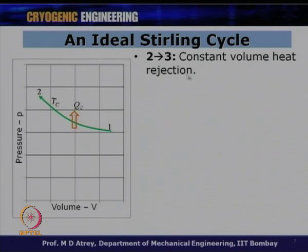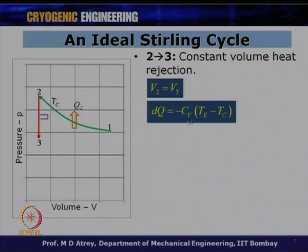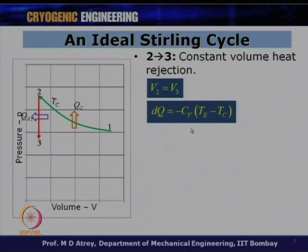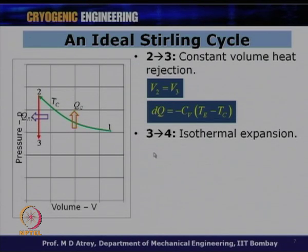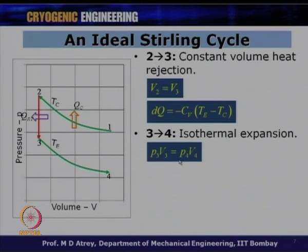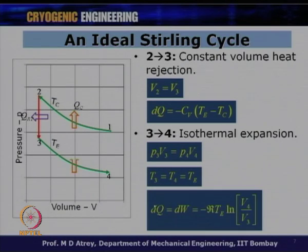Process 2–3 is constant volume heat rejection, where V₂ = V₃ and dQ = −Cv(Te − Tc). Process 3–4 is isothermal expansion at temperature Te, where P₃V₃ = P₄V₄, T₃ = T₄ = Te, and the cooling effect is dQ = RTe·ln(V₄/V₃). Process 4–1 is constant volume heat absorption, where V₄ = V₁ and dQ = Cv(Tc − Te).